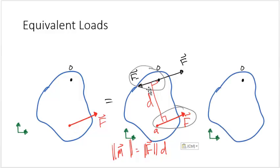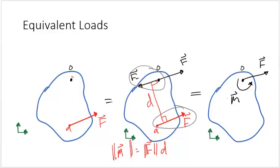We can replace these two forces in the force couple by a moment whose magnitude is given by F times the perpendicular distance between them. The force left over is F at O. What we have done is replace the force F at A with the same force F at O plus an additional moment couple. This is necessary because simply moving force F from A to O would not capture the moment caused about O from force F at A, so we must represent it as a moment couple plus force F at O.